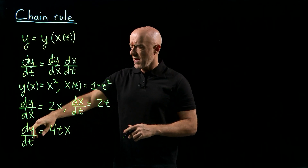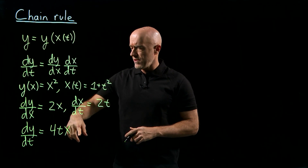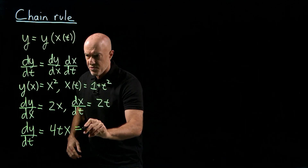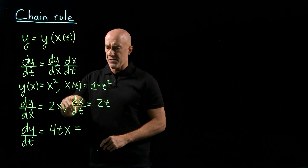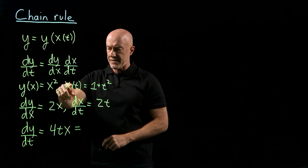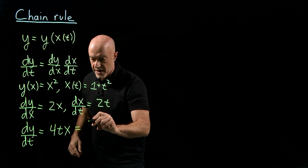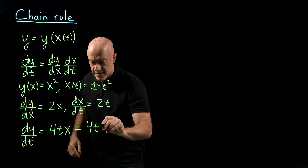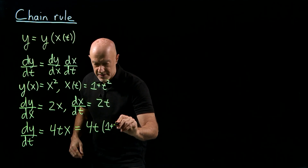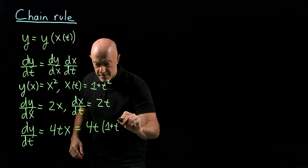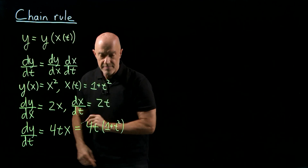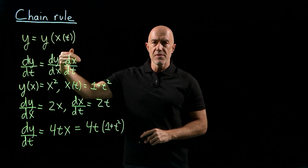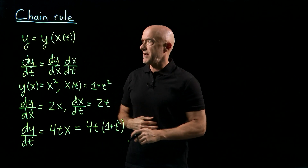We multiply these, giving us 4t times x. Most of the time we want to know this as a function of t, so we substitute in x equals 1 plus t squared, giving us 4t times 1 plus t squared. That's the result from the Leibniz notation.